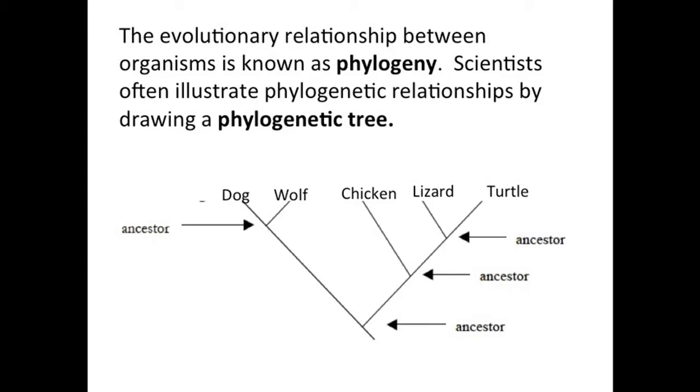The base or the trunk of the tree begins to divide into smaller and smaller branches. Each division separates the organism into smaller groups based upon an observed physical characteristic or maybe genetics or behavior.